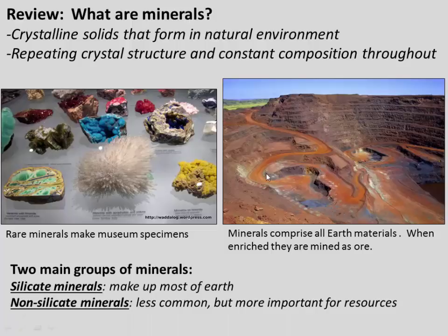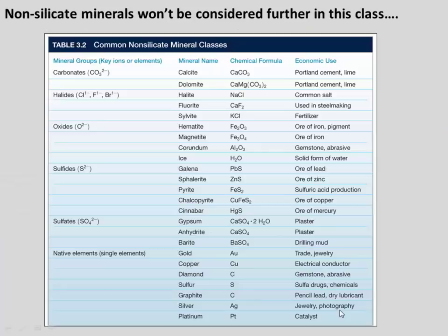As we think about the different value of minerals, we want to divide them into two main groups: silicate minerals and non-silicate minerals. Silicate minerals are key because they make up 99.9% of Earth materials, including our entire mantle, which is peridotite rock. Non-silicate minerals are less common, but they may be more interesting, and they're often very important for resources. We're not going to cover non-silicates further in this class, but here's a quick table showing some famous non-silicate minerals — carbonates with a CO3 group, halides with chlorine or fluorine, oxides, sulfides, and sulfates.